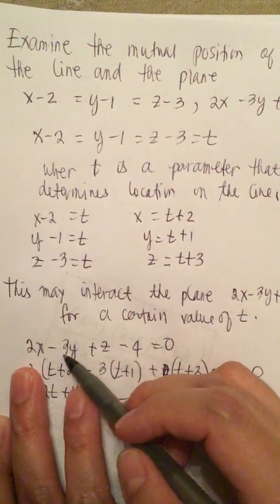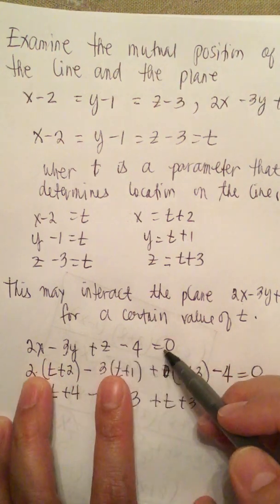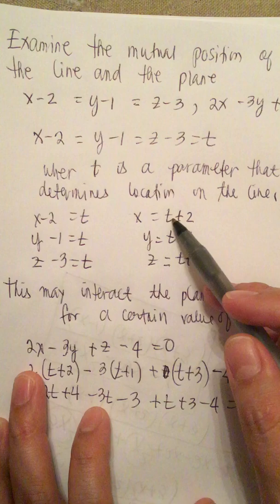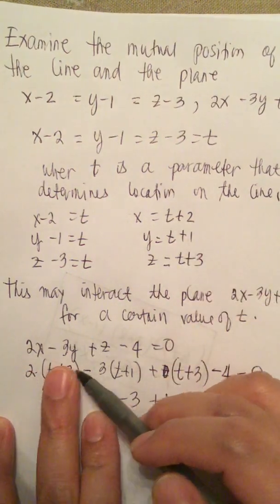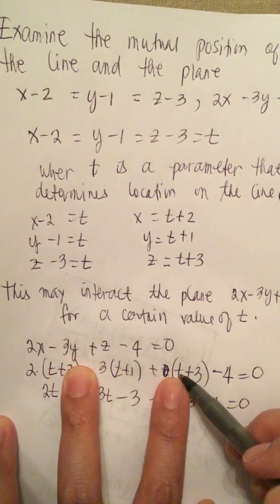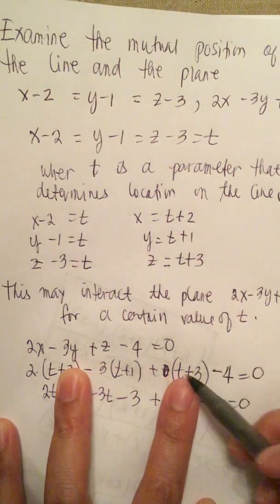So 2x minus 3y plus z minus 4 equals 0. And the value of x is t plus 2, we plug that in. Minus 3y is t plus 1, and z is t plus 3.